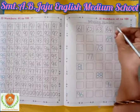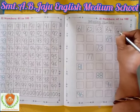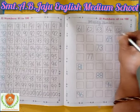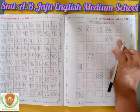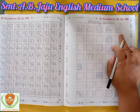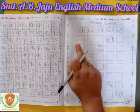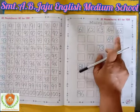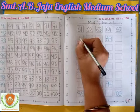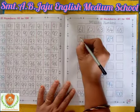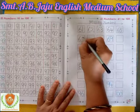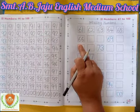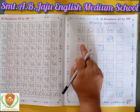After 64, which number comes? 65. First write down 6, then write down 5. 65. Now which number comes after 65? Write down 6, 6 — 66. First write down 6, then one more 6. So this is 66.